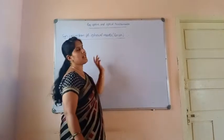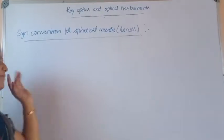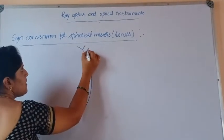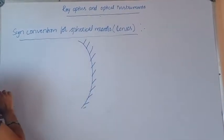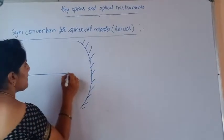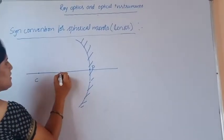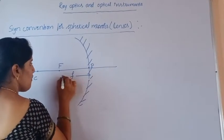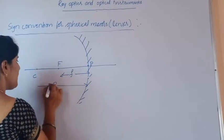Sign conventions for spherical mirrors are also applied for lenses. First, let us draw a concave mirror. This is the silver or painted portion and this one is the reflecting surface. Let us draw a principal axis. This is the pole, this is the center of curvature, and this point is known as focus. The distance between the pole and focus is known as focal length, and the distance between the pole and center of curvature is known as radius of curvature.